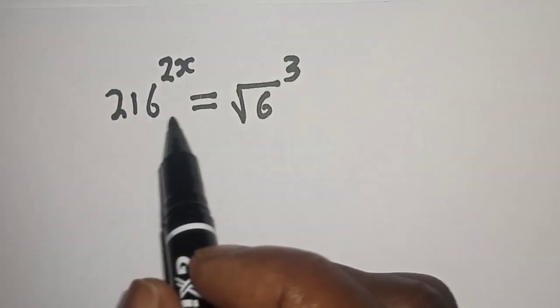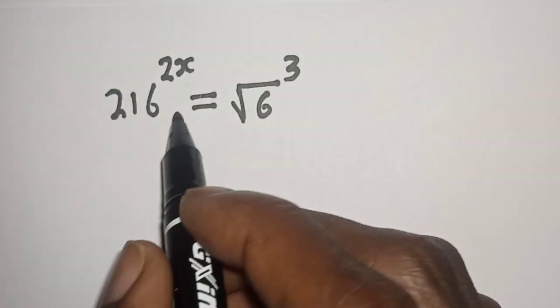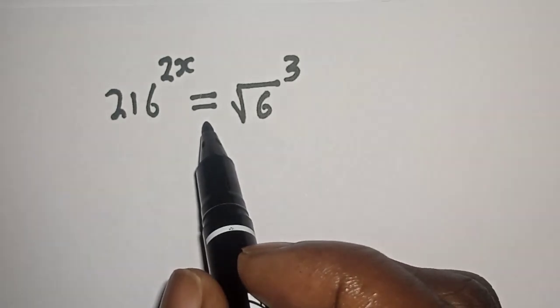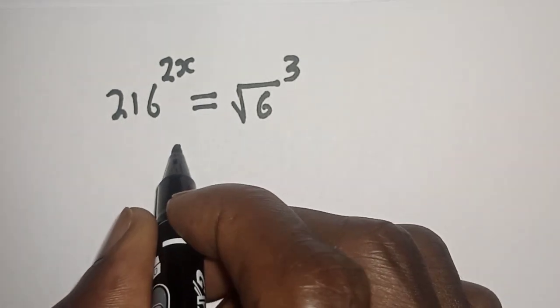216 raised to power 2x is equal to square root of 6 raised to power of 3. Hi everyone, welcome to my class. In this class I want to find the value of x from this equation. But before we proceed, don't forget to like, share, comment and subscribe.